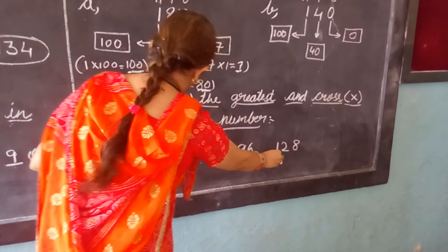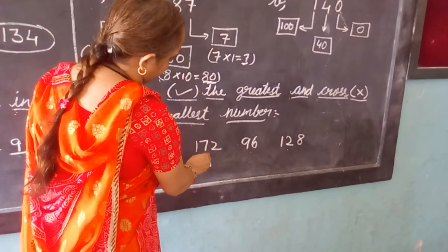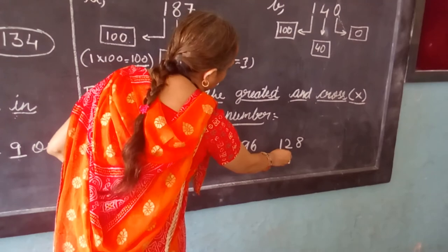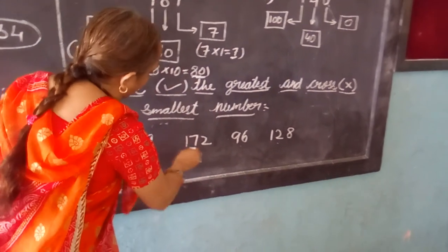So we will go for next number. Here we have 0, here 7 at 10 place, and here 2. So 7 is the greatest among them.